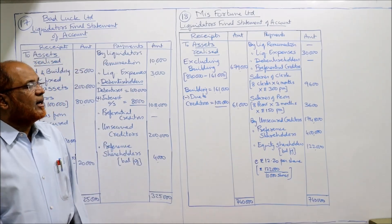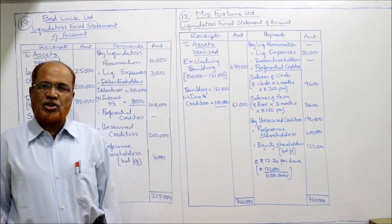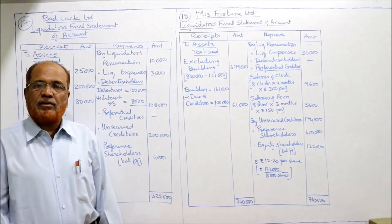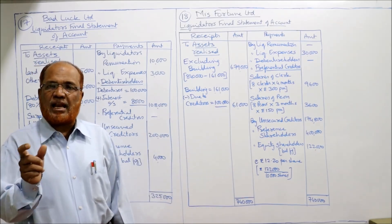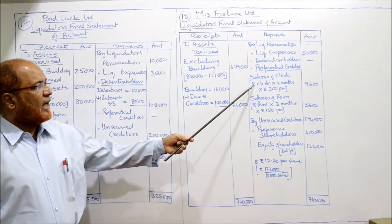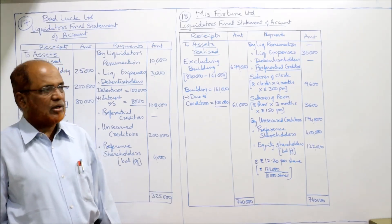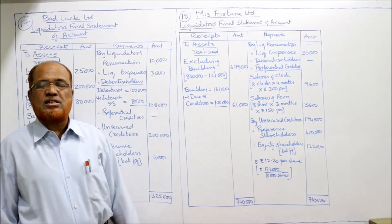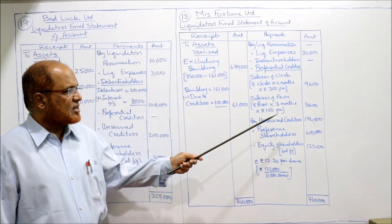On the payments side: liquidator's remuneration — no mention in the problem, so just a dash. Liquidation expenses 30,000 given. No debenture holders in this problem. Preferential creditors: salaries of clerks 9,600 and salaries of peons 3,600 — both preferential under the Companies Act. Unsecured creditors 1,74,800 are given. The company is solvent and has sufficient funds to make full payment.